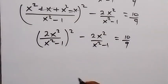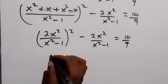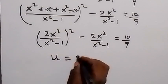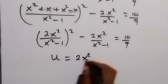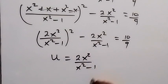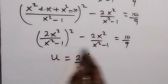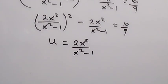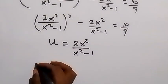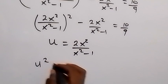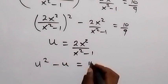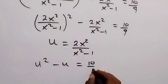We can see something common here, which is 2x²/(x²-1). So let's use a new letter. Let u = 2x²/(x²-1). Then we write this in terms of u: this becomes u² - u = 10/9.